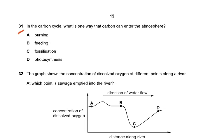Question 31: In the carbon cycle, what is one way that carbon can enter the atmosphere? Photosynthesis actually uses up the carbon dioxide. Fossilization - nothing happens, no carbon dioxide input or output. Feeding - wrong. So the only answer left is burning.